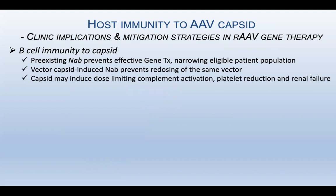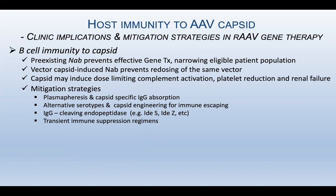I would like to summarize it as follows. First, B-cell immunity to the capsid: pre-existing neutralizing antibody prevents effective gene transfer, narrowing the eligible patient population. Vector capsid-induced neutralizing antibody prevents redosing of the same vector. Capsid may also induce dose-limiting complement activation, platelet reduction, and renal failure. Mitigation strategies include plasmapheresis and capsid-specific IgG absorption, alternative serotypes or capsid engineering for immune escape, IgG-cleaving endopeptidase digestion, or transient immune suppression regimens.